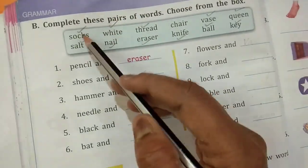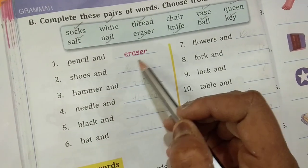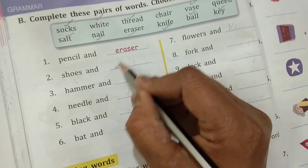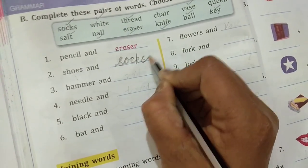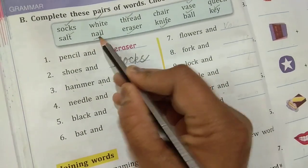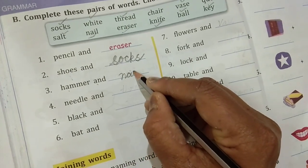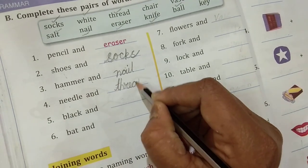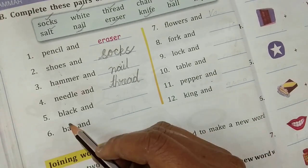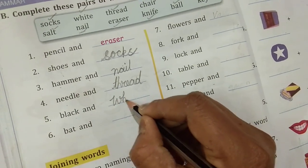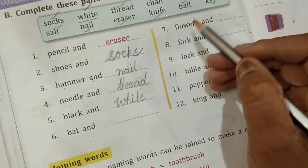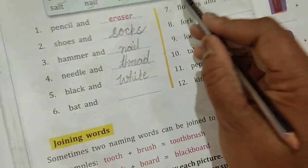Here, complete these pairs of words. Choose from the box. Pencil and eraser. Shoes and socks. S-O-C-K-S, socks. Hammer and nail. Needle and thread. T-H-R-E-A-D. Black and white. Bat and what children? Bat and ball.